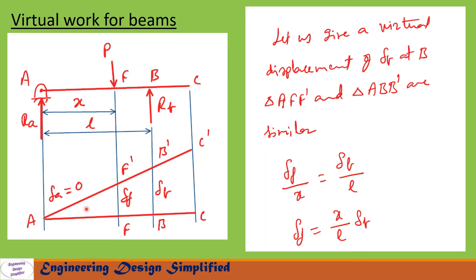We have similar triangles A-F-F′ and A-B-B′. From these two similar triangles, the displacement at F is delta_F, and we have given a virtual displacement of delta_B at B, with delta_A equal to 0. From the similar triangles A-F-F′ and A-B-B′, we can write delta_F / x = delta_B / L, so delta_F = (x / L) · delta_B.